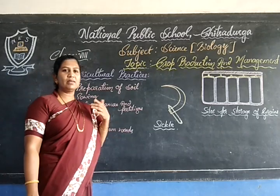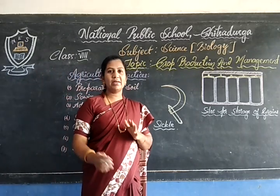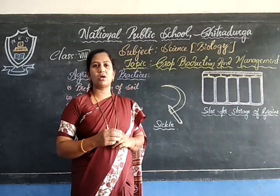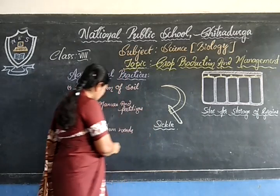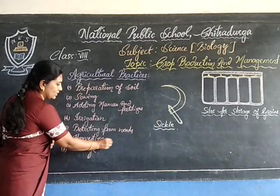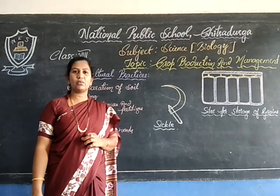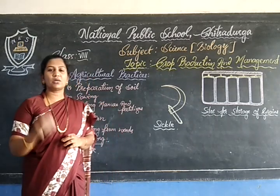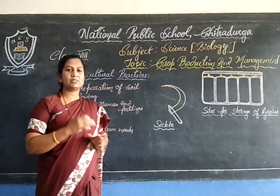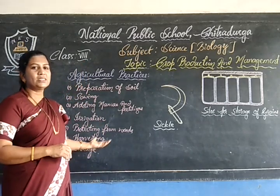After the growing of the seedling or the crop, the time comes for the cutting of the crops, and this is known as harvesting. After a season of 3 to 4 months duration, the crop will be ready for cutting, and this process is known as harvesting.